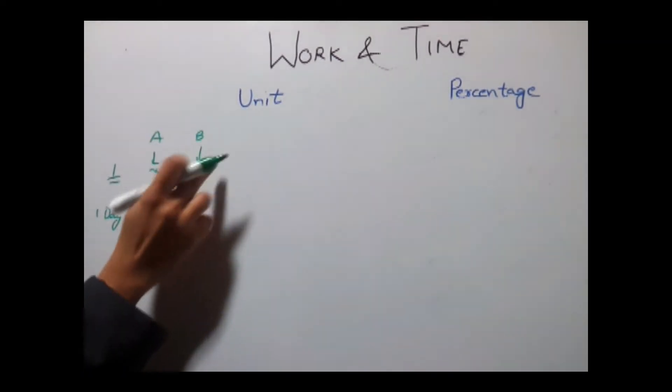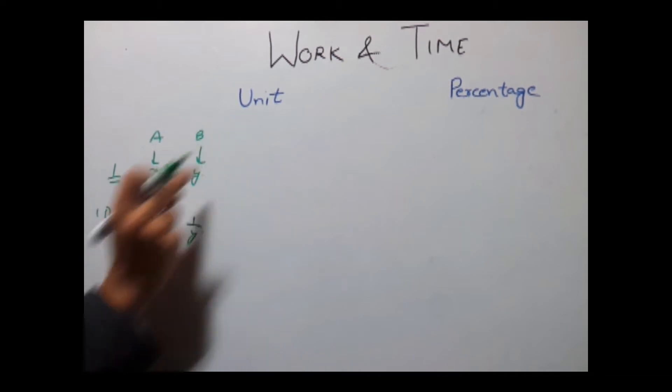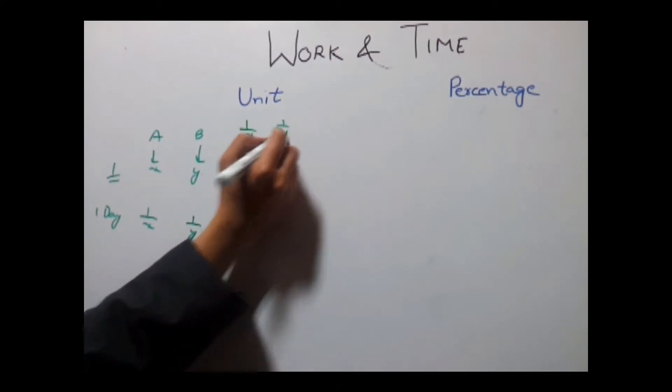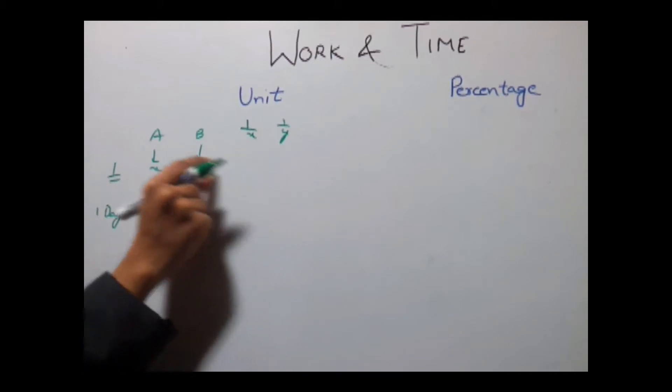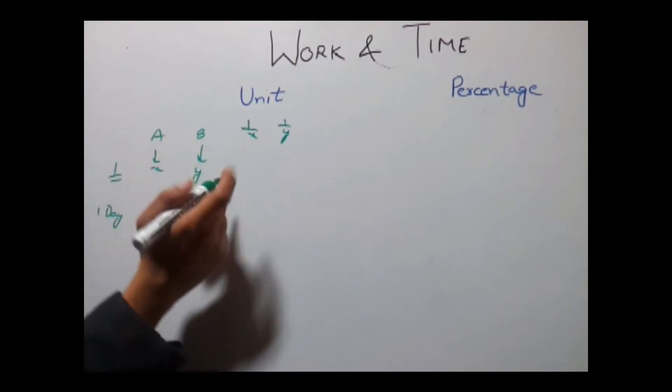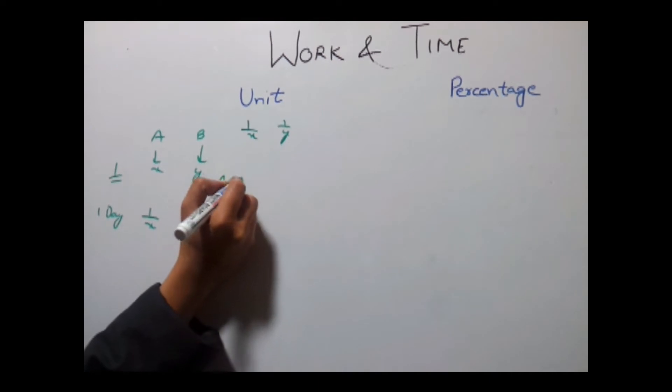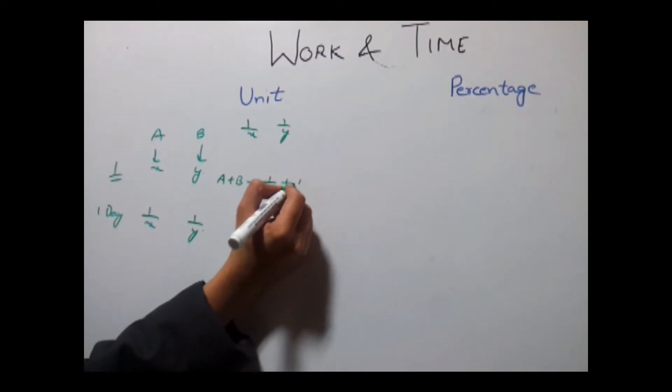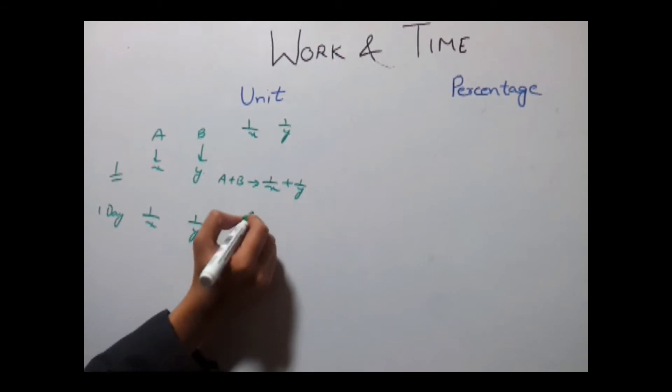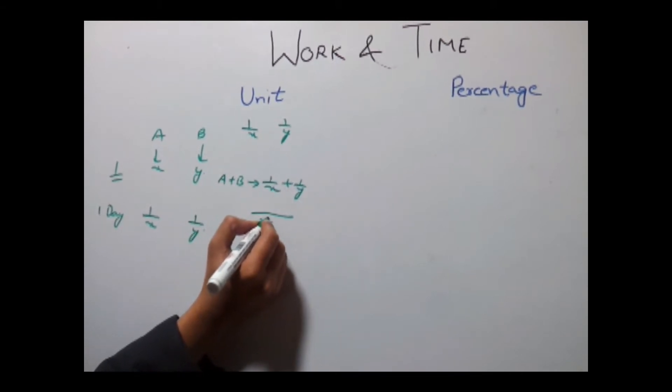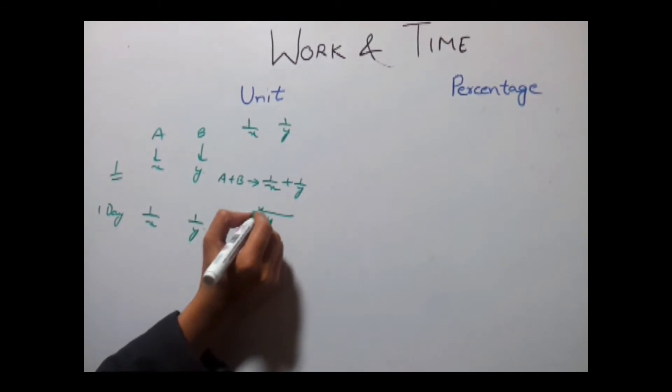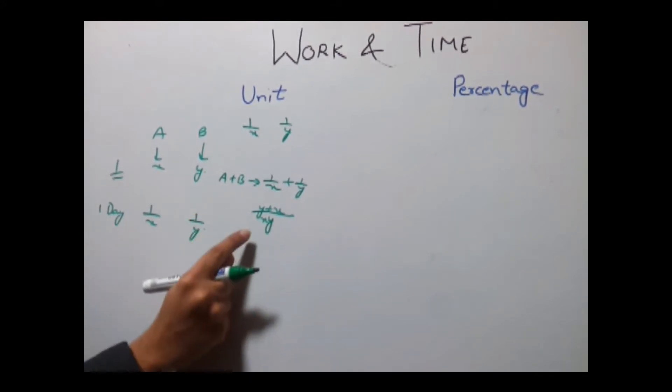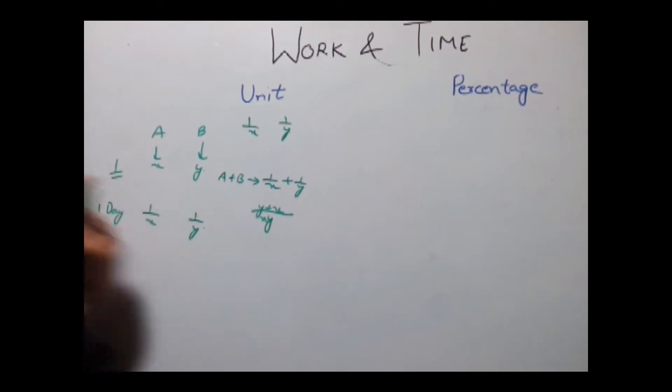Work done by A and B in case of units is defined as 1 by X and 1 by Y. If we need to calculate work done by A and B together, they will do 1 upon X plus 1 upon Y in one day, or taking the LCM you can say X plus Y upon XY. So in one day together A and B will do X plus Y upon XY.